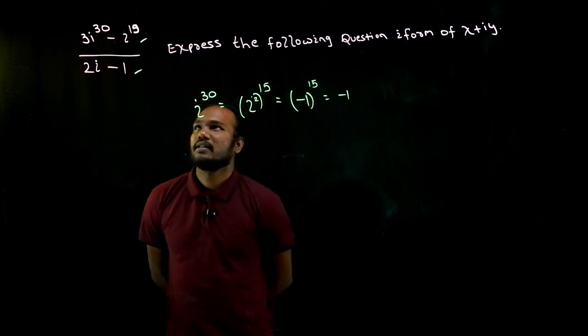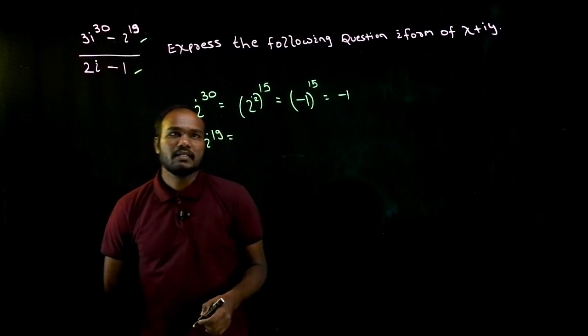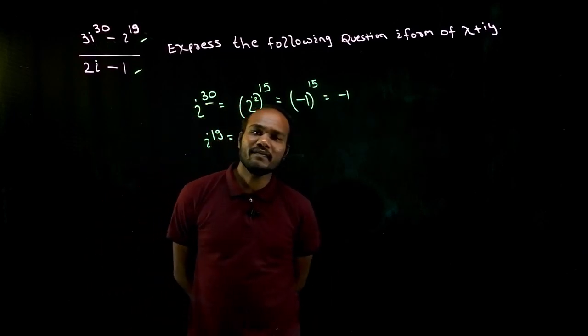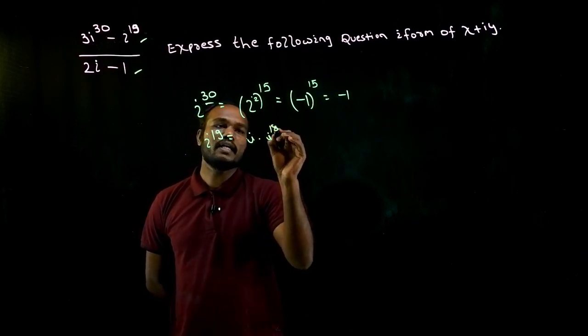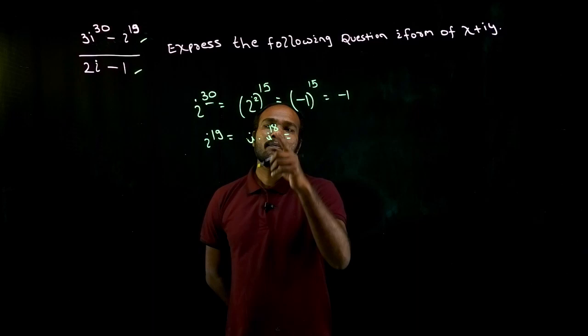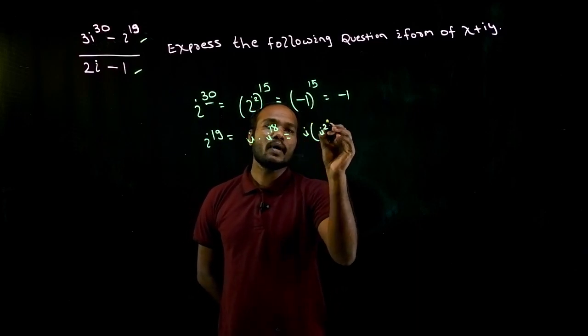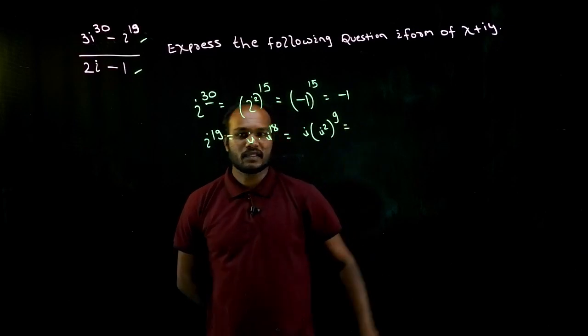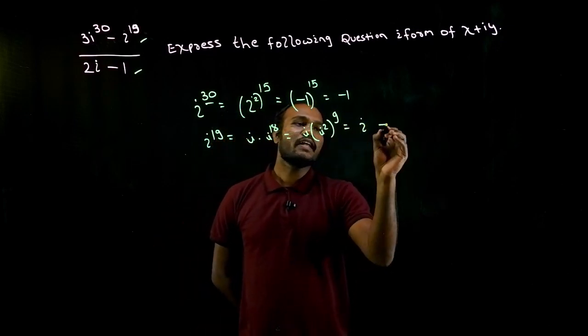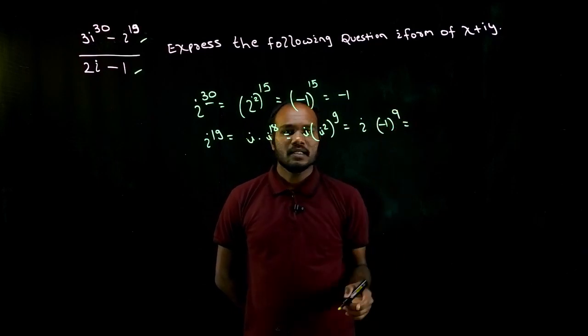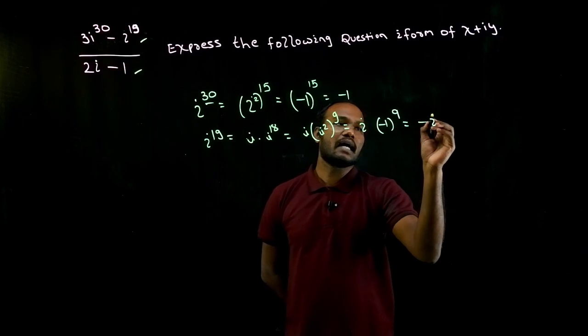The same way, i power 19, how to write i power 19? See here, always it should be even, so what we consider? We multiply i times i power 18, right? So i power 18, I will keep it as i square power 9, isn't it? So i square value is minus 1 power 9, isn't it? So minus 1 power 9 is minus 1, so we'll get minus i.